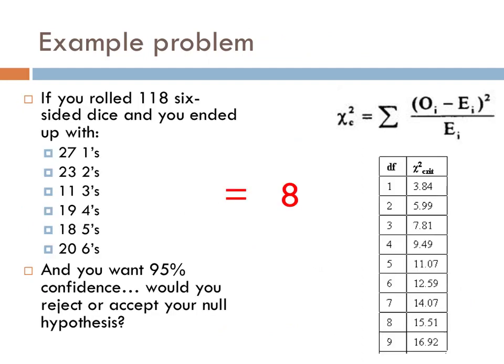Since there were six possible outcomes in this scenario, there are six minus one, or five degrees of freedom. With this test, there was an experimental chi-squared value of 8. With five degrees of freedom and a level of significance of 0.05, the critical value is 11.07. Since the experimental value, or 8, was lower than the critical value, or 11.07, the null hypothesis is accepted.